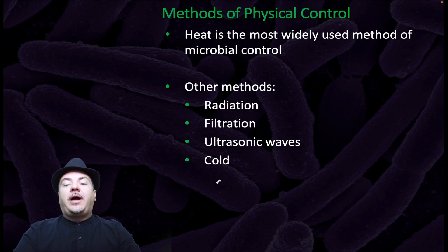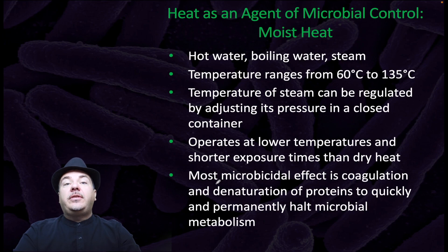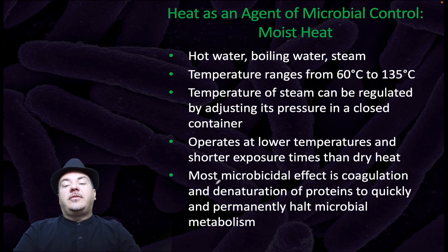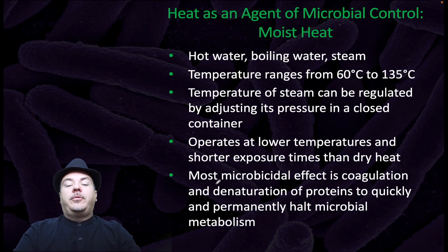Heat is the most widely used method of microbial control. Other methods include radiation, filtration, ultrasonic waves, and cold. With heat, one method is moist heat — for example, hot water, boiling water, or steam. Temperature ranges from 60 degrees Celsius to 135 degrees Celsius. Temperature of steam can be regulated by adjusting its pressure in a closed container. Moist heat operates at lower temperatures and shorter exposure times than dry heat. Most microbicidal effect is coagulation and denaturation of proteins to quickly and permanently halt microbial metabolism.